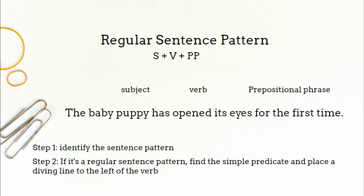Next, find the simple predicate in the sentence and place a dividing line to the left of the verb. Opened is the main verb, but since has is the helping verb, the dividing line goes right before has.